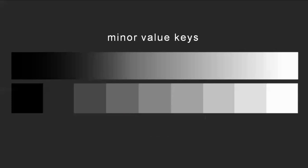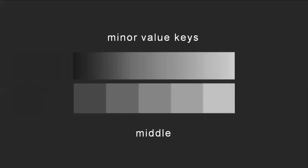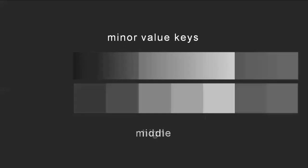In minor value keys, you're limiting the range of tones you're going to use. If I want to create a low minor value key, I might use only this end of the spectrum, from darkest dark to about middle gray. If I wanted to use a middle minor value key, I might use middle gray and a couple of steps in either direction towards darker and lighter, but not the full range — not blackest black and not whitest white. And if I want a high minor value key, I might use mostly white and go just a few steps toward middle gray, but definitely won't use blackest black.